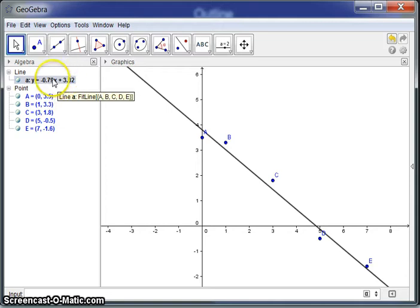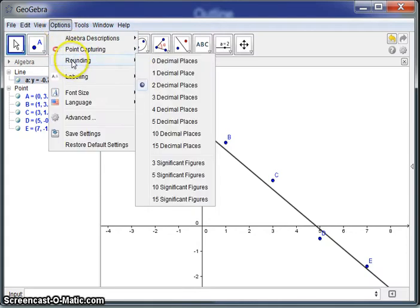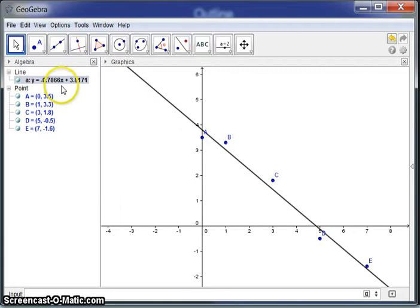And GeoGebra right now is set to round to two decimal places. We can change, remember, we can change that by going to options, rounding, and change to whatever decimal version we would like. And there's a four decimal approximation for that regression line.